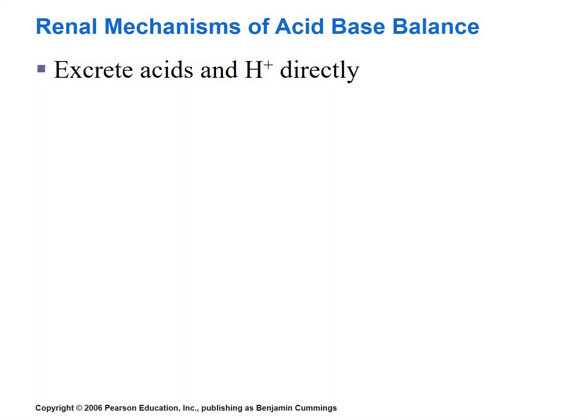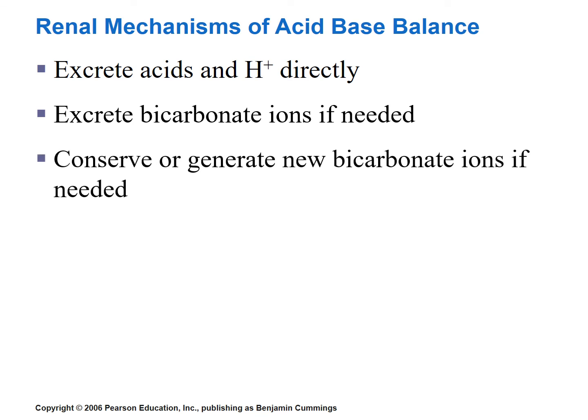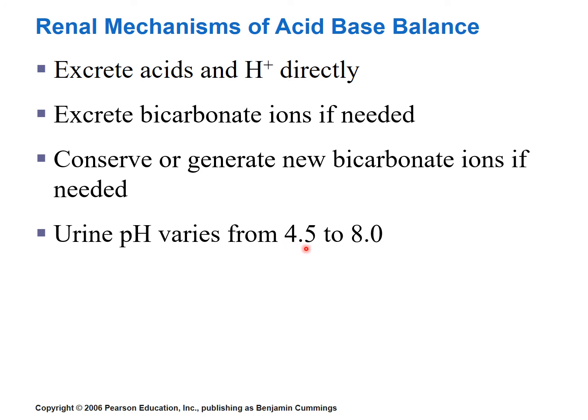To recap how the kidneys regulate blood pH: they can excrete acids and hydrogen ions directly; they can excrete bicarbonate ions if necessary, or conserve and generate new bicarbonate ions to increase the capacity of the bicarbonate buffer system. Because the kidneys can significantly vary the excretion of these substances and ions, urine pH can range anywhere from 4.5, which is significantly acidic, to 8, which is significantly basic.